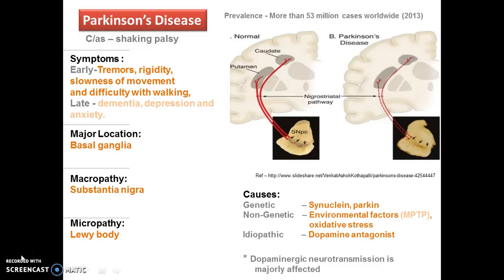As the disease advances further it leads to dementia followed by depression and anxiety-related problems. The major brain location of this disease is the basal ganglia. The nigrostriatal dopaminergic neuronal pathway is the major target, in which dopaminergic neurons starting from the substantia nigra pars compacta towards the caudate and putamen become degenerated.